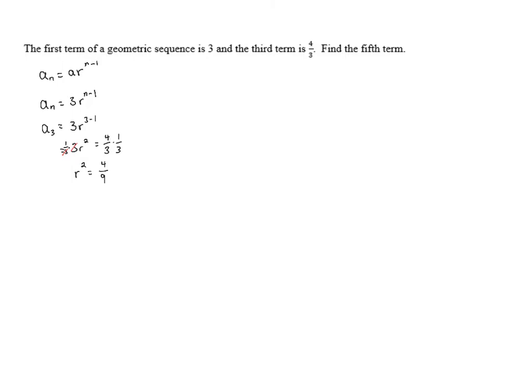To get r alone by itself, we use the square root property here. And so that gives us r = ±√(4/9), taking the square root of both sides. And the square root of 4/9 is 2/3. So we have r = ±2/3.